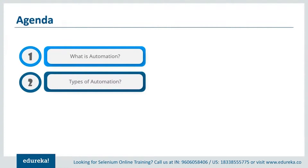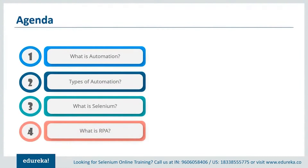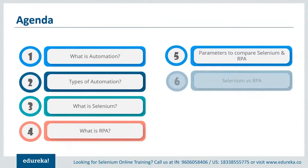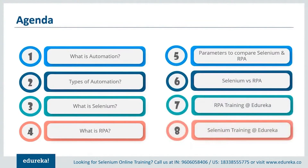So first we'll talk about the automation testing tool Selenium and learn its features. Once we're done with that, we'll take a look at the business process automation technology RPA and comprehend how it is used to automate repetitive tasks. Moving further, we'll discuss the parameters taken into consideration for comparing both Selenium and RPA, talk about their similarities, and finally wrap up by comparing them based on those parameters.